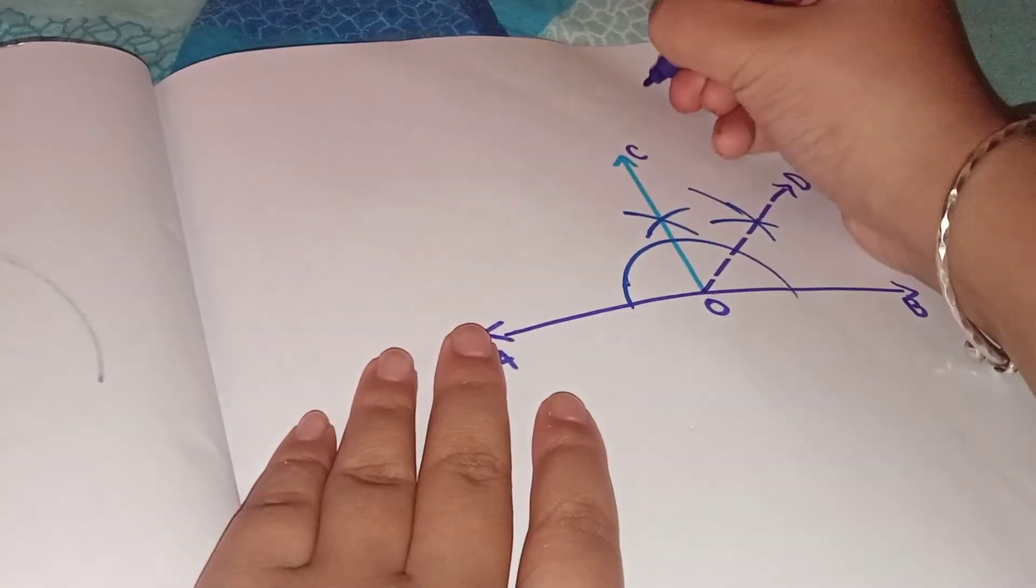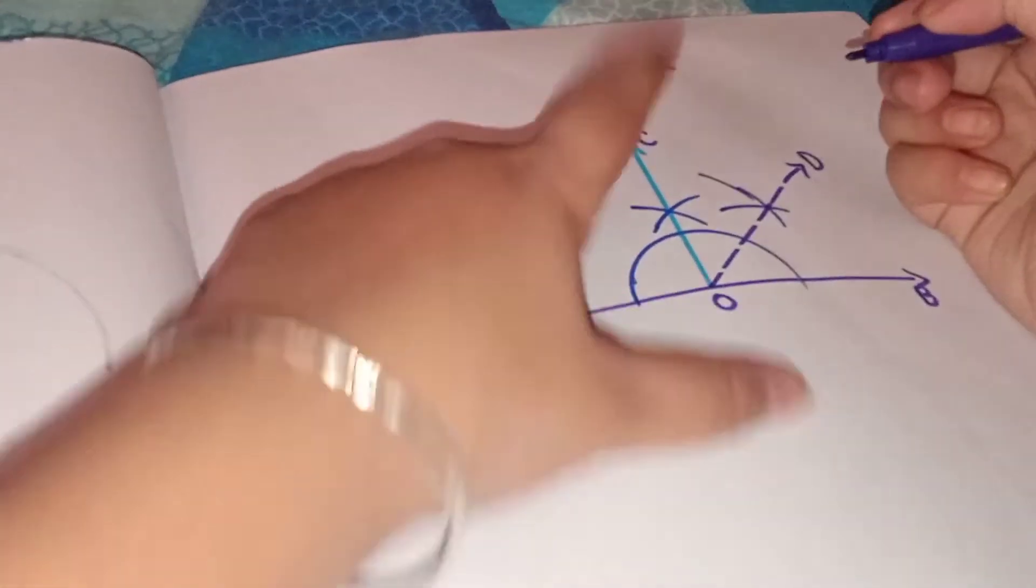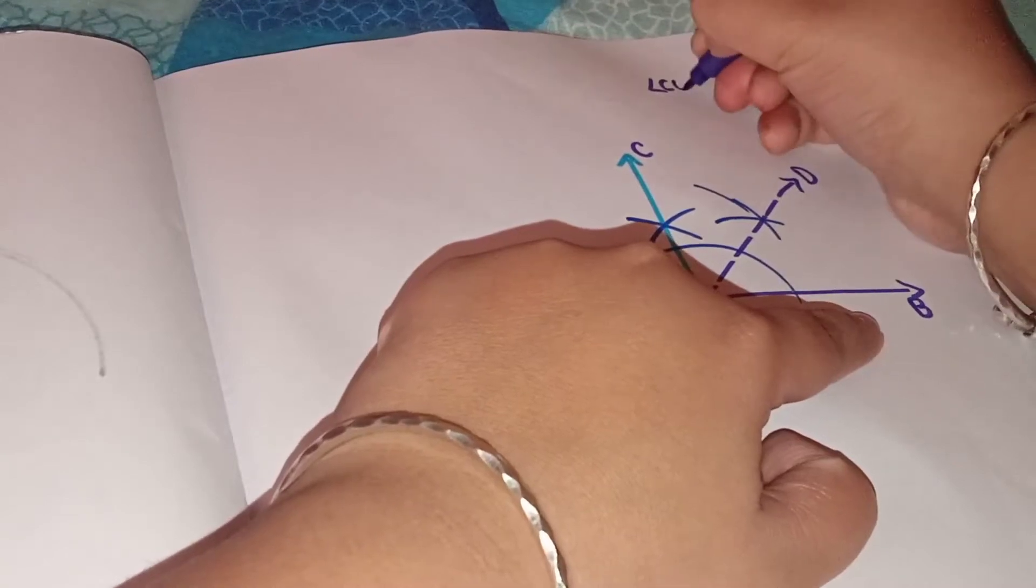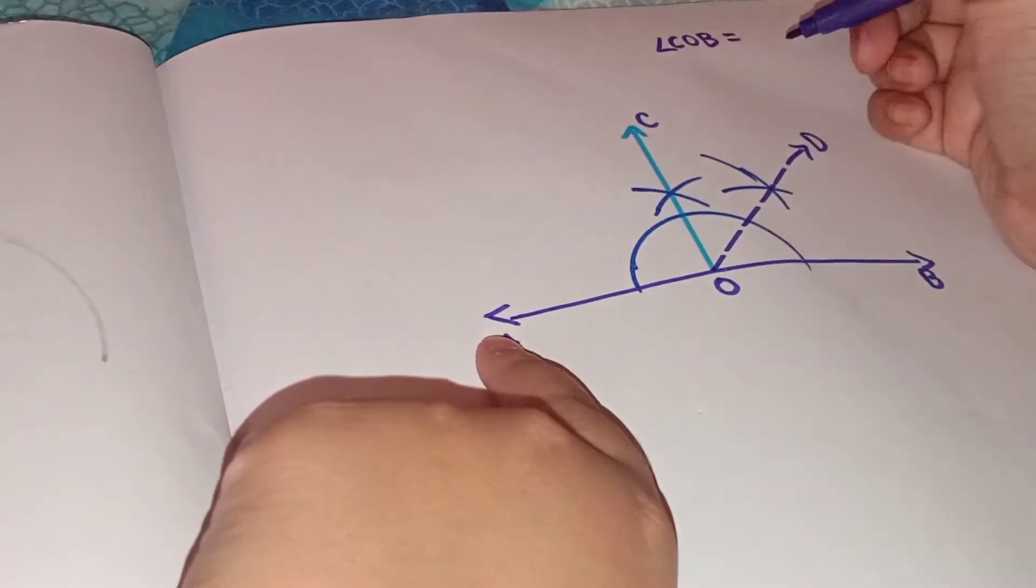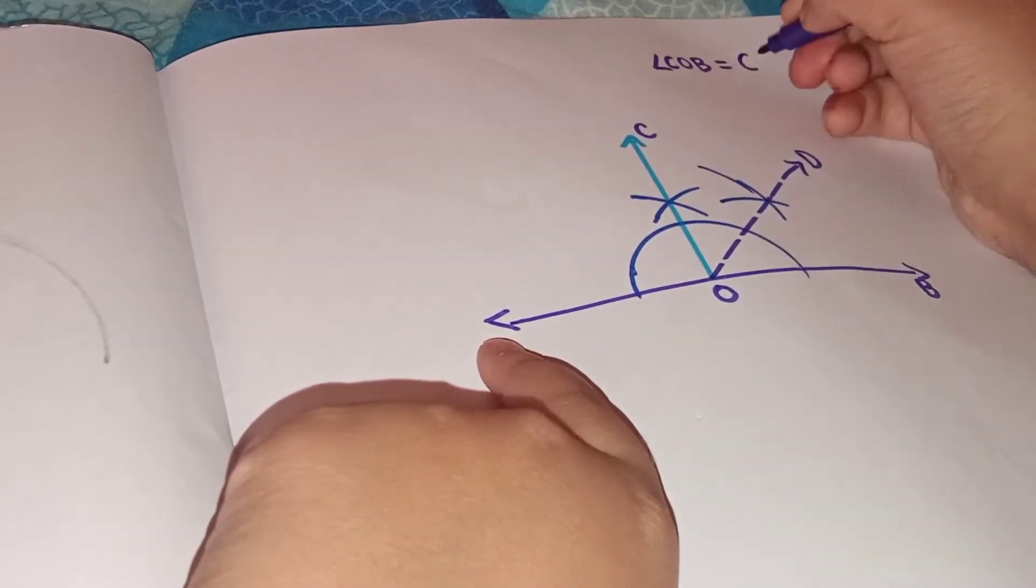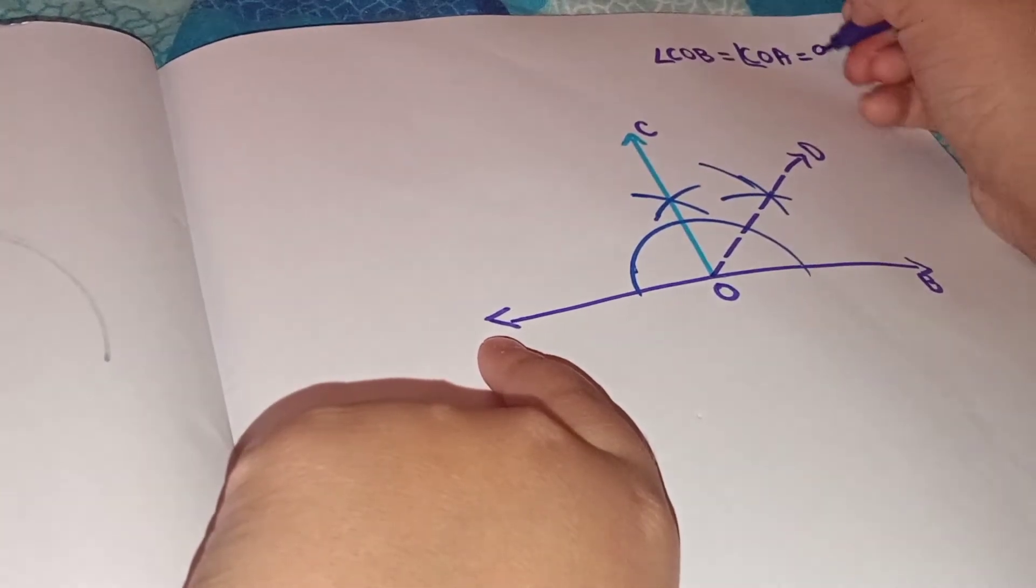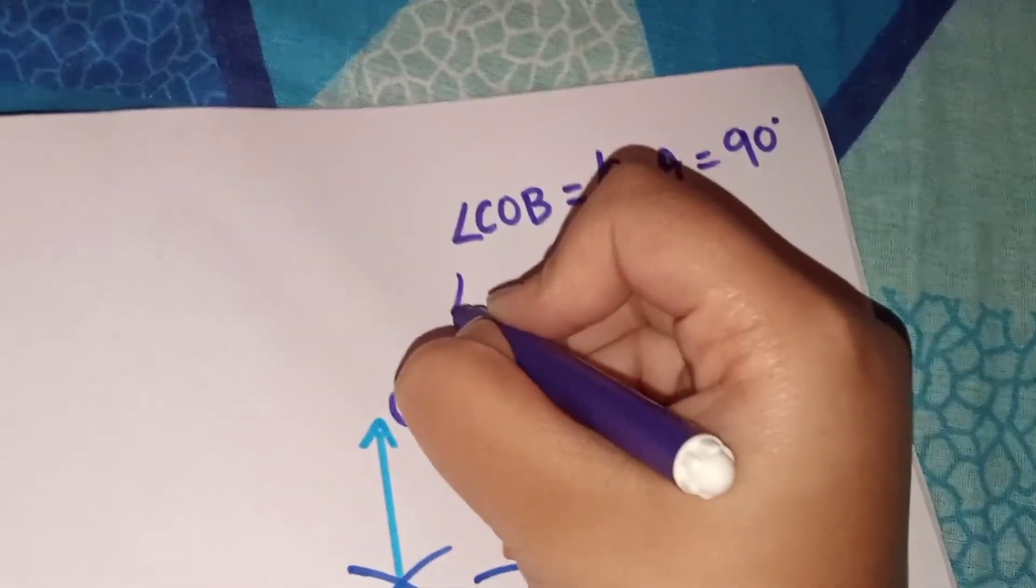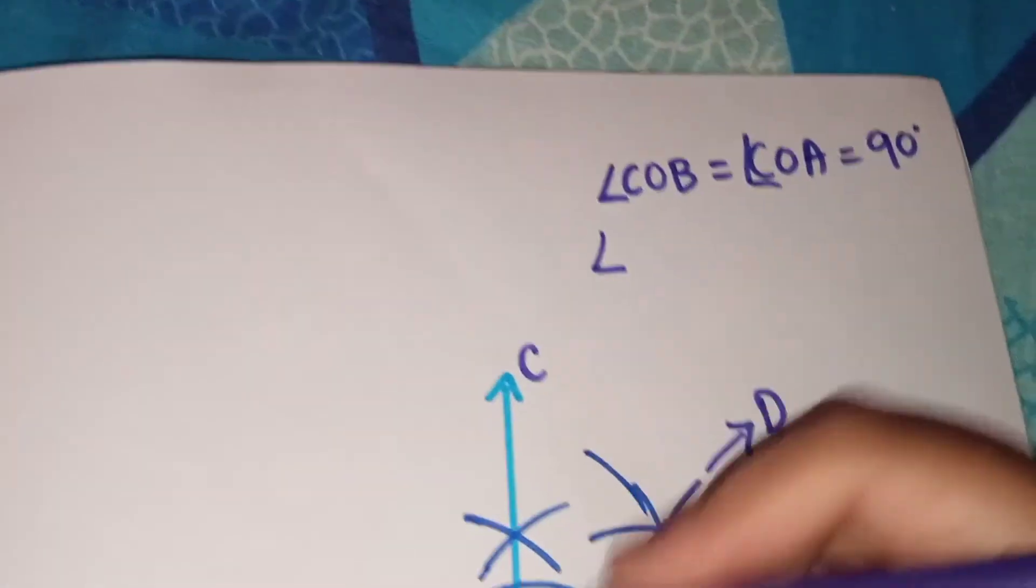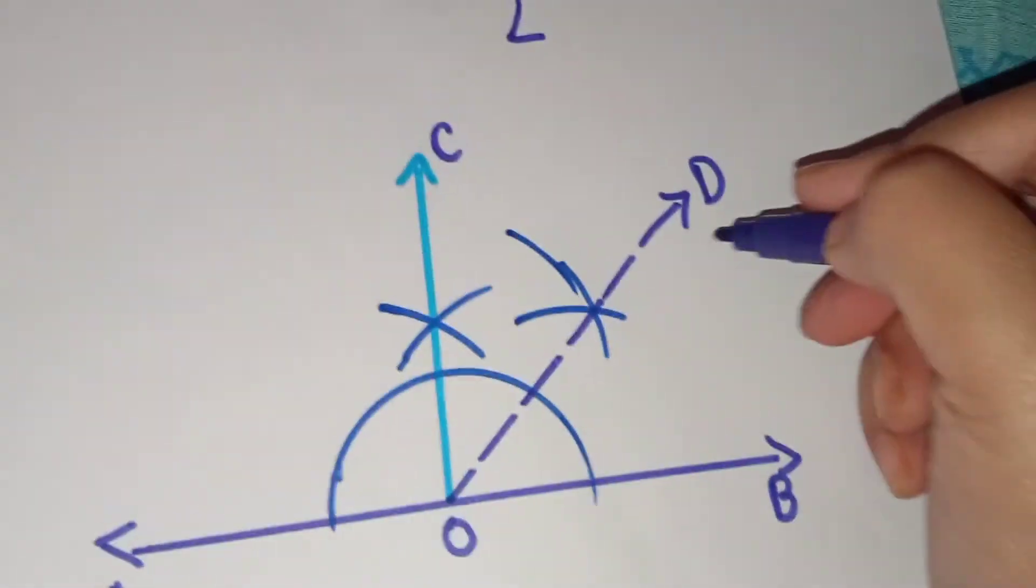We will write here angle COB is equal to COA is equal to 90 degree. So as right angle forms from the both side of the line, so we will write both angles COB and COA is equal to 90 degree, and COD...